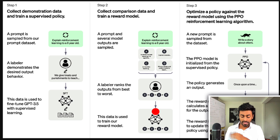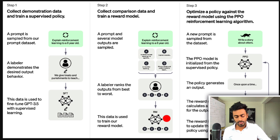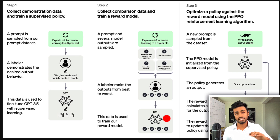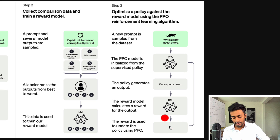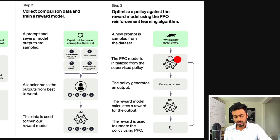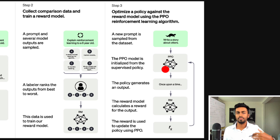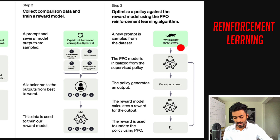The rewards model is a separate GPT architecture that takes in an input prompt and one possible response, and outputs a number from one to seven showing how high quality that response is for the given prompt. In step three, we use both models together: we pass an unseen input through the supervised fine-tuned model to get a response, then pass it to the rewards model to assess quality. That reward is then used to fine-tune the parameters of our supervised fine-tuned model, incorporating more human-like characteristics via reinforcement learning.